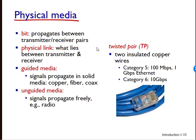The physical medium can take many shapes and forms and does not have to be of the same type for each transmitter-receiver pair along the path. Examples of physical media include twisted pair copper wire, coaxial cable, multimode fiber optic cable, terrestrial radio spectrum, and satellite radio spectrum. Physical media fall into two categories: guided media and unguided media. With guided media, the waves are guided along a solid medium such as a fiber optic cable, twisted pair copper wire, or coaxial cable. With unguided media, the waves propagate in the atmosphere or in outer space, such as in a wireless LAN or a digital satellite channel.